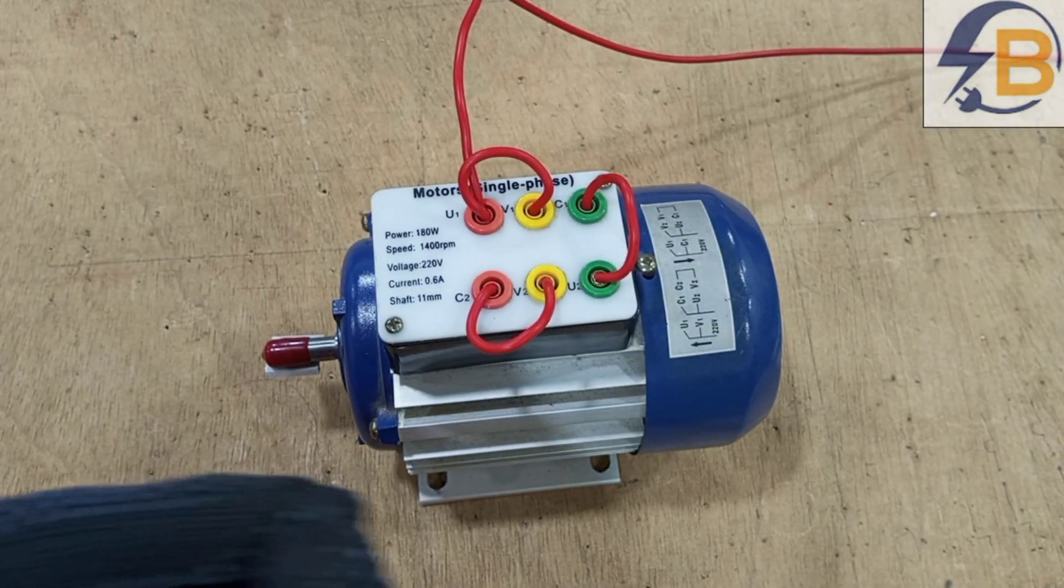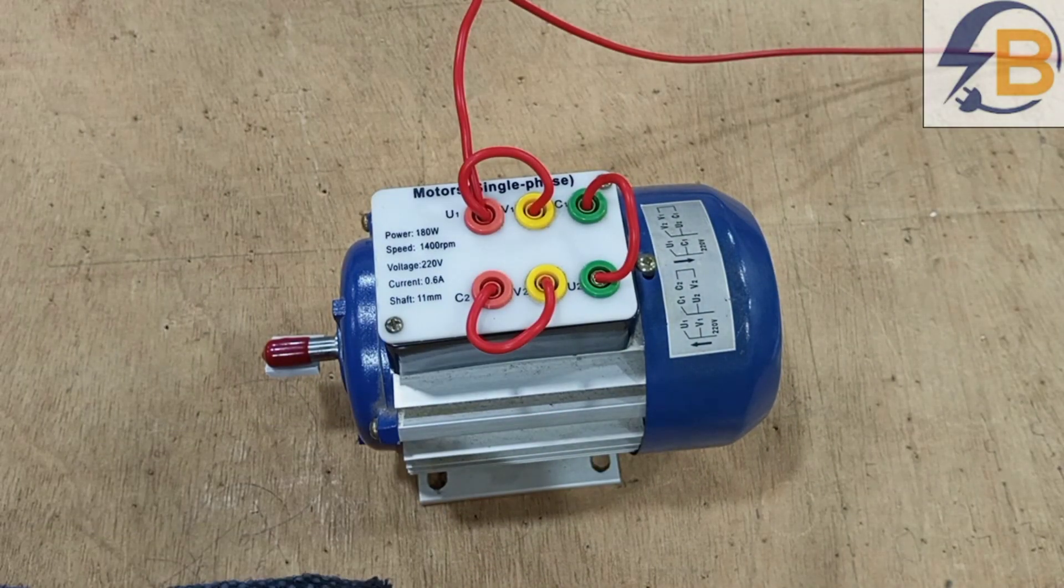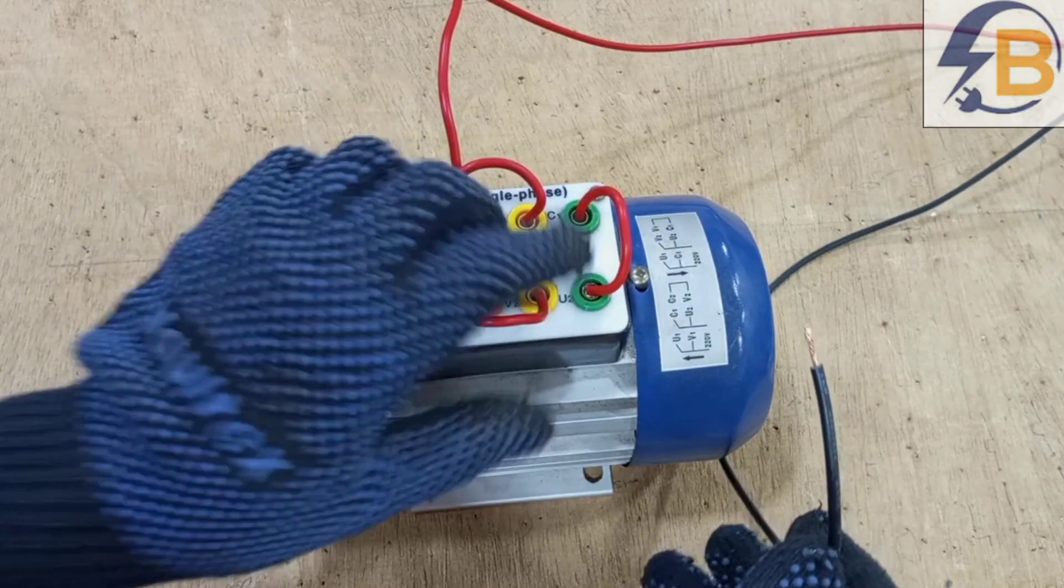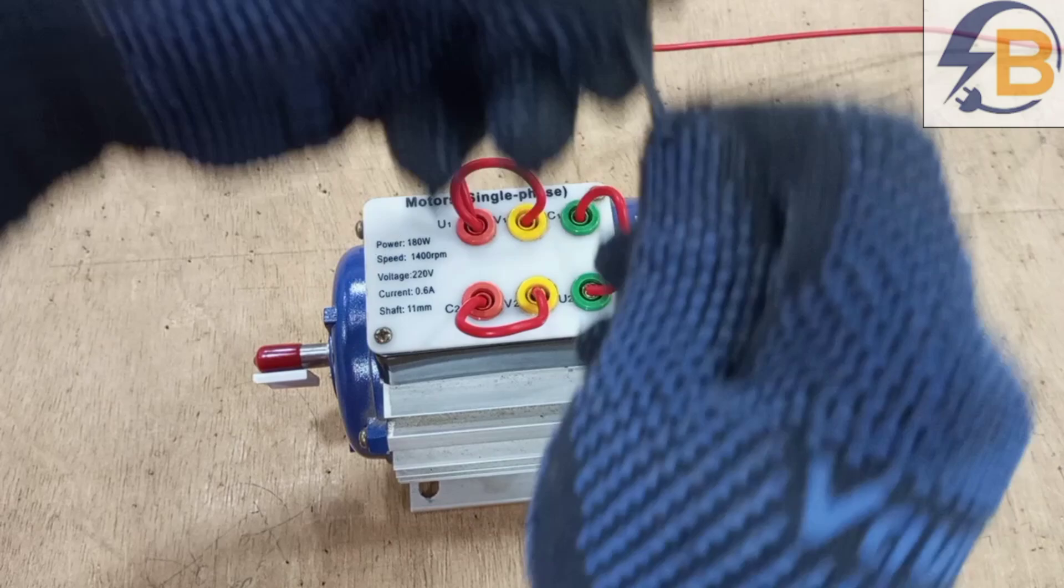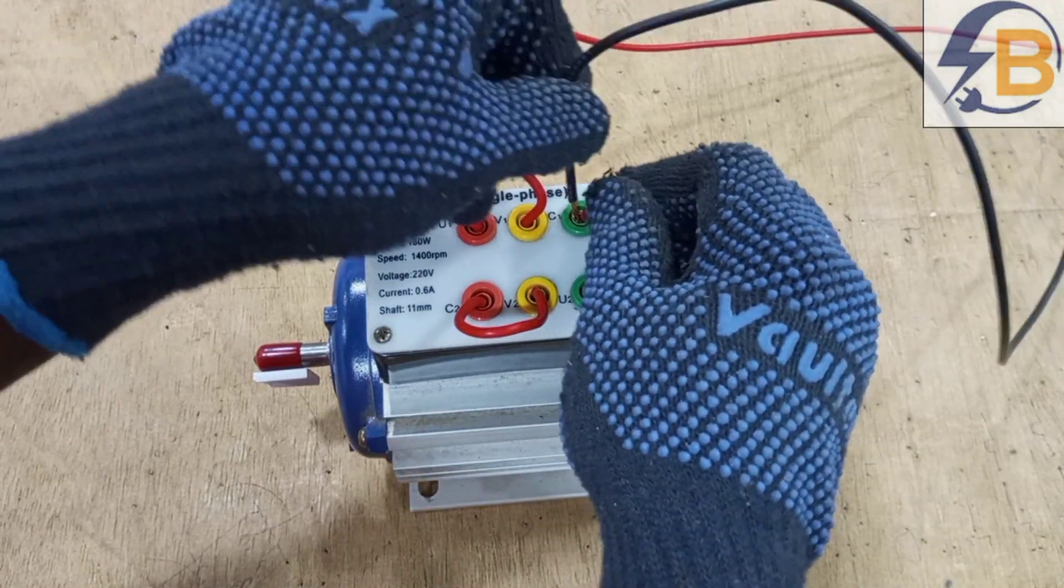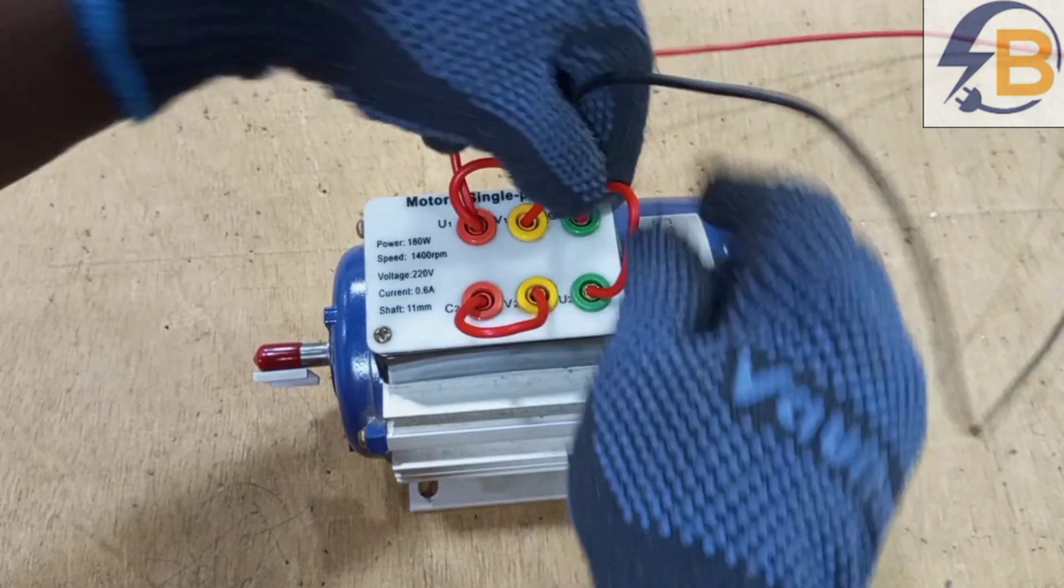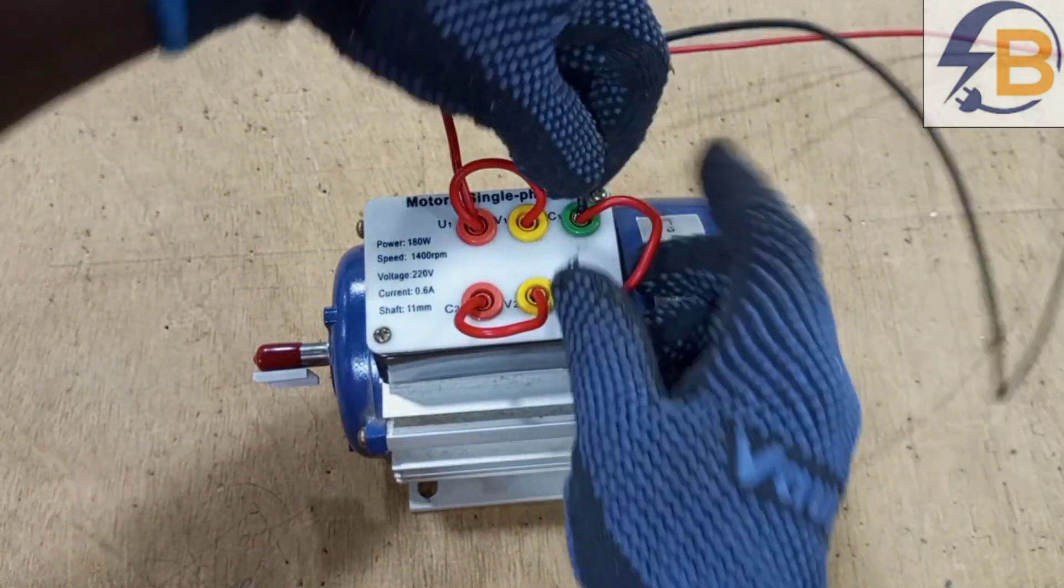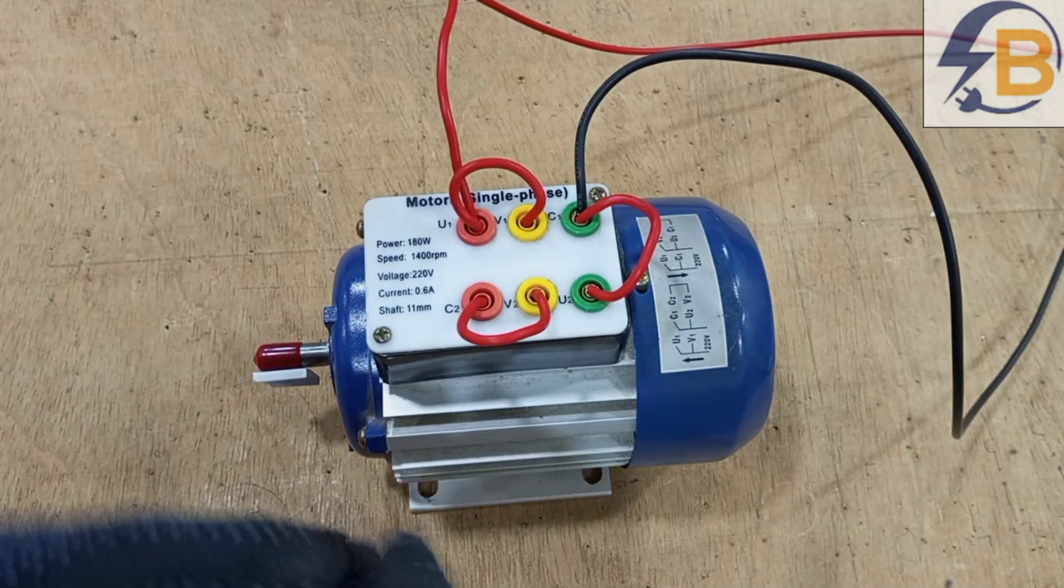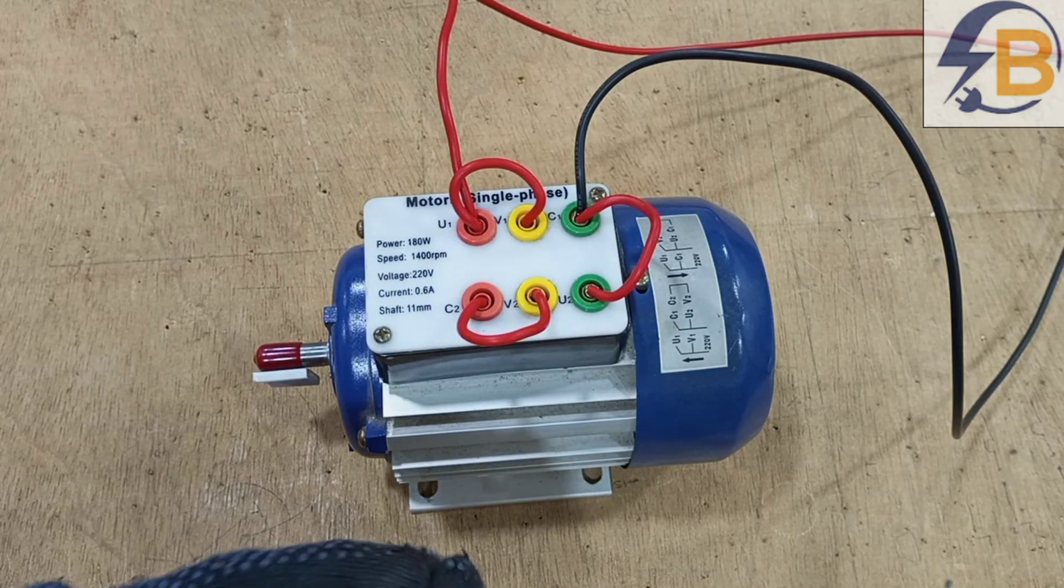So now we are left with neutral. So our final connection to make our single phase motor work is the connection of the neutral. And our neutral comes to C1. So we have live and neutral. And this is how the terminals are supposed to be connected.